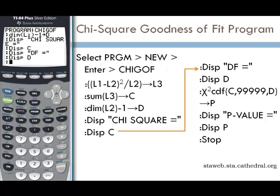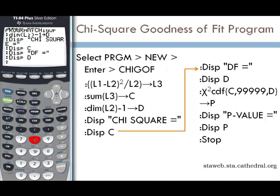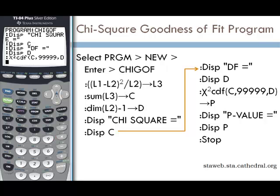Now we want to do a chi-squared CDF, found under SECOND DISTR, option eight. Enter: chi-squared CDF open parenthesis, ALPHA C, comma, 99999, comma, ALPHA D, close parenthesis, store as P (ALPHA P). Then add a display showing ALPHA C comma ALPHA P. Press ENTER.